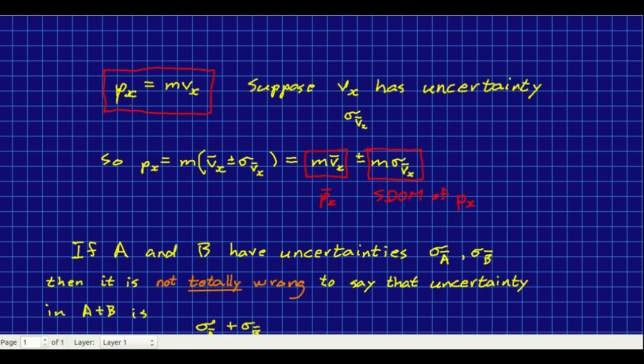This is a particularly simple case that we're looking at here. Let's say we're getting the uncertainty in the momentum of a single cart. Well that quantity is calculated just as an inertia times a velocity component. Let's suppose that the uncertainty in the inertia is small enough that we can ignore it and then the velocity component has an uncertainty, right, this is an SDOM sigma v bar x.